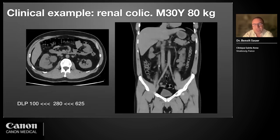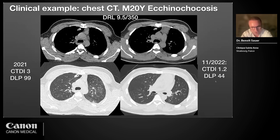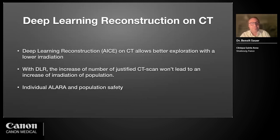Another example: renal colic in a 30-year-old, the whole abdominal exploration for just 100 DLP — much better than sonography but with very low radiation cost. A 20-year-old patient shows our normal low-dose protocol for pulmonary and mediastinal evaluation. In conclusion for CT: deep learning allows better exploration at lower radiation, so we perform more CT scans with a greatly increased number without leading to increased radiation of the population — there is individual ALARA and population safety due to DLR.